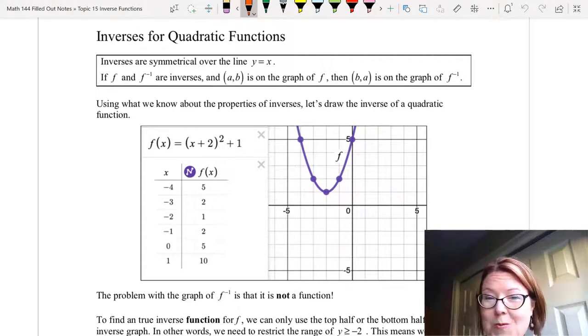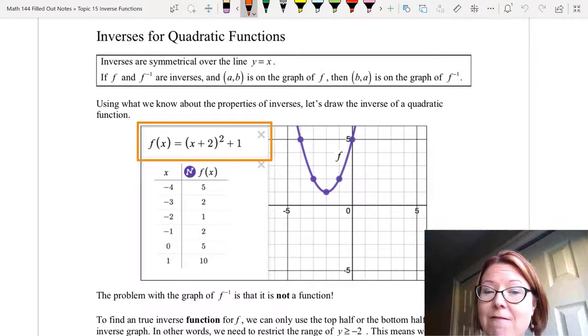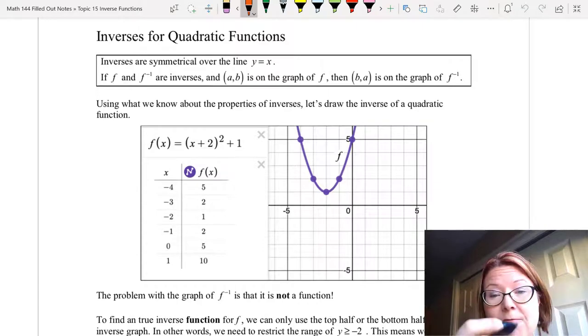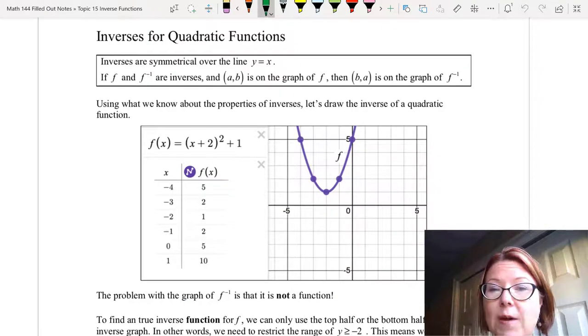So using what we know about those properties of inverses, let's draw the inverse of a quadratic function. I've got a function f(x) = (x+2)² + 1. I have a table of values for this graph, and as I read off this table of values, I'm going to go ahead and graph the reverse of that set of points.